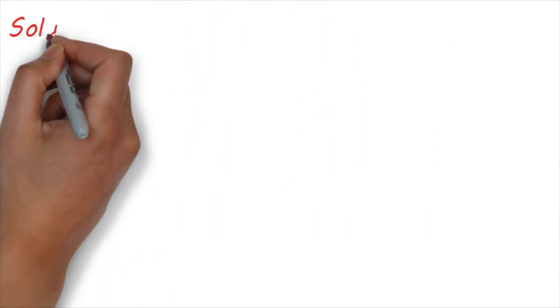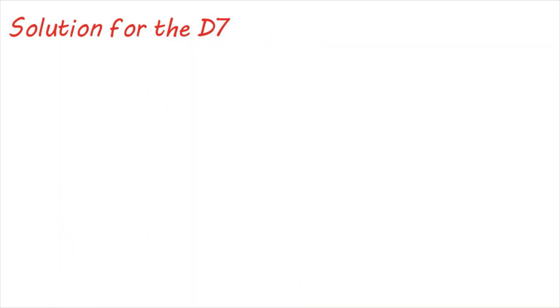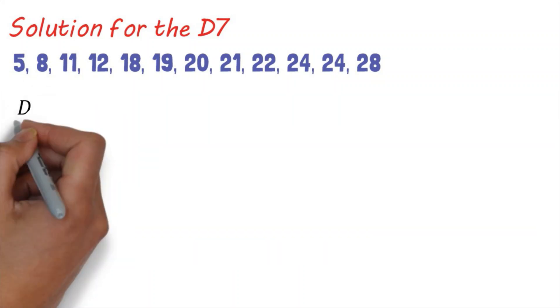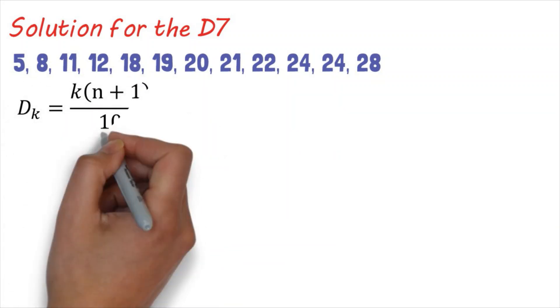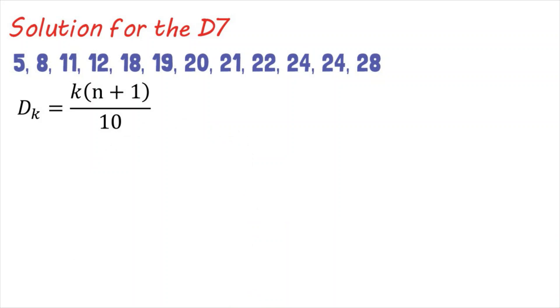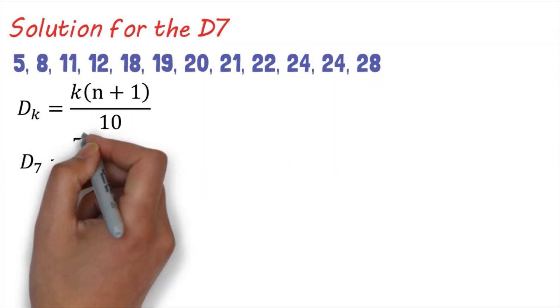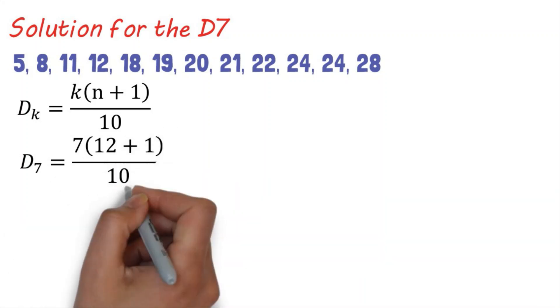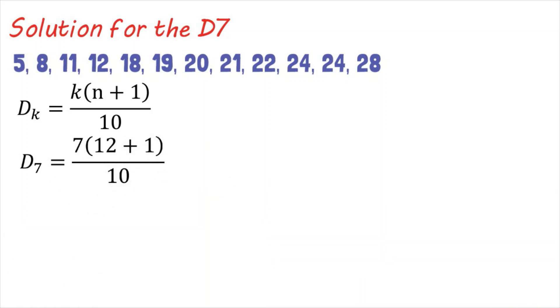Let us now try to solve for D7. Again, in step 1, we arrange the data in ascending order. Next, we locate the position of the score in the distribution using the formula D sub k equals k times the quantity n plus 1 divided by 10 since we are looking for decile 7. We substitute the value of k which equals 7 and the value of n which equals 12. So we have D sub 7 equals 7 times the quantity 12 plus 1 divided by 10.